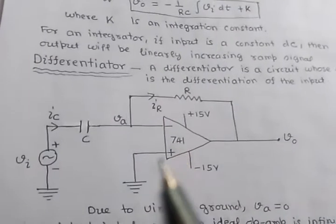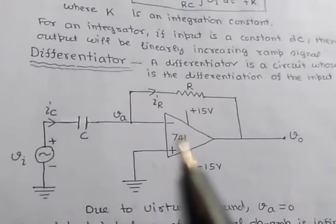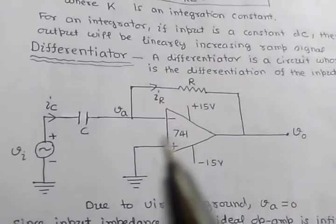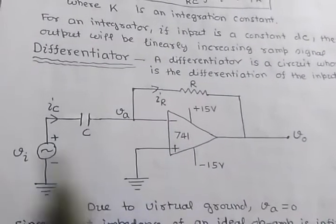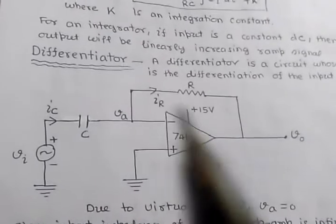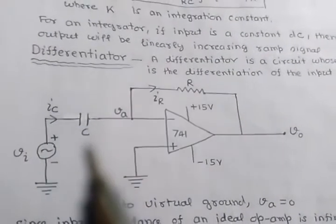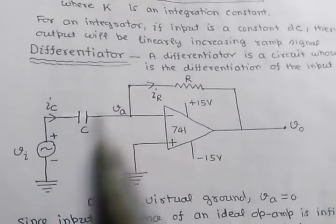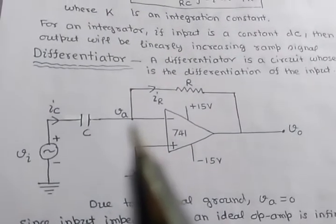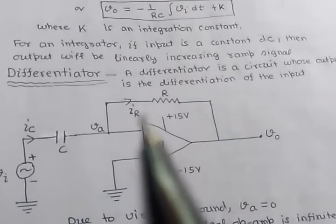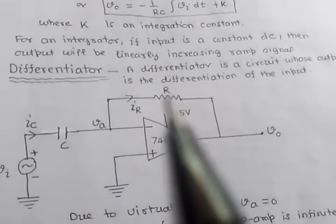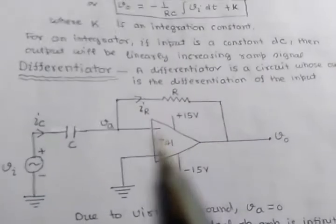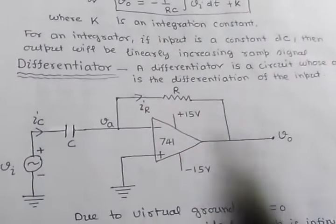Like the integrator, the input terminals of this op-amp will draw zero current due to infinite input impedance. So IC and IR will both be equal. IC is C into dVc/dt, where Vc is the voltage across capacitor C, which is Vi minus VA. IR equals the voltage across resistance R divided by R, and the voltage across this resistor is VA minus Vo, so IR equals VA minus Vo upon R.